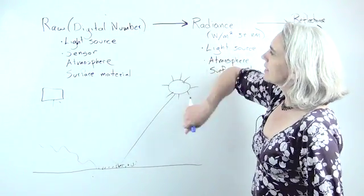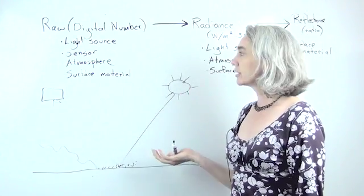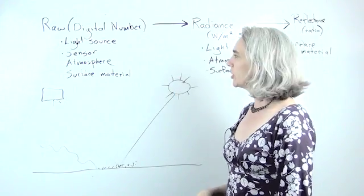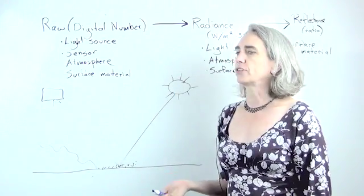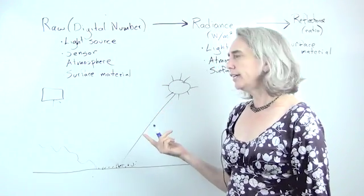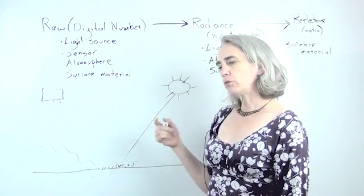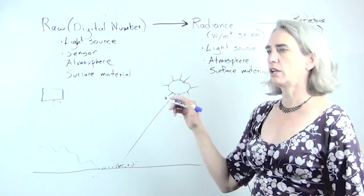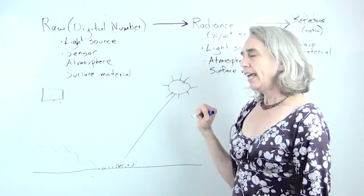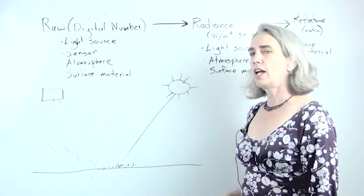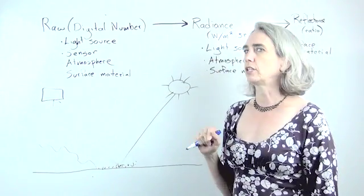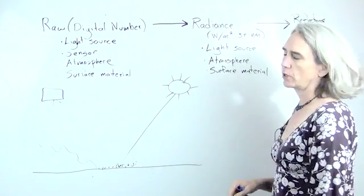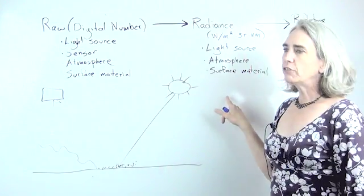Data in that state includes the effects of the light source that was used to illuminate the surface. It includes effects of the sensor, effects of the atmosphere, and effects of the surface material. So we usually, if we're going to be doing any kind of quantitative analysis, want to correct some of those things out. And so we do what's called first a calibration. And that takes the pixel values from their raw DN numbers to physically meaningful units of radiance. The typical, probably the most common units for radiance is watts per meter squared per stereoradium per nanometer.